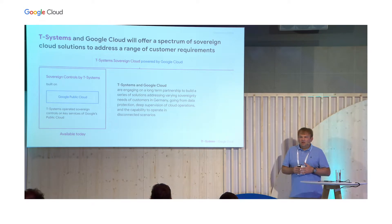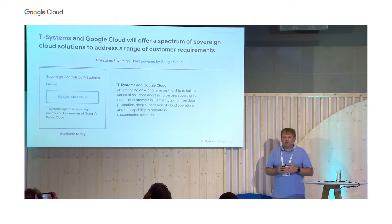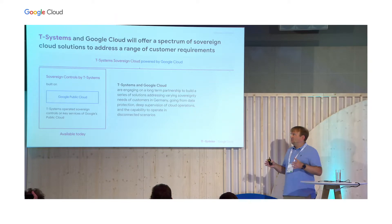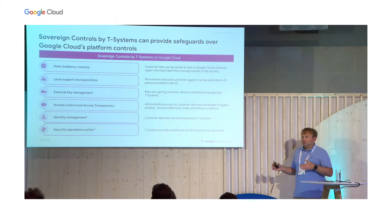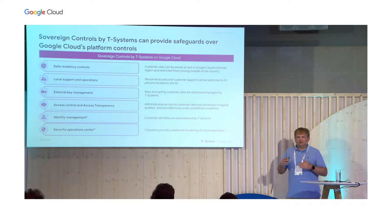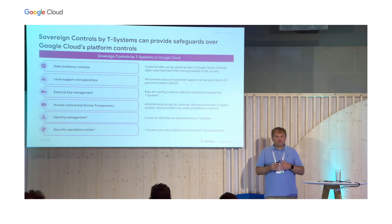Looking at Germany, we started a partnership with T-Systems that is now offering sovereign controls for Germany in the DACH market, completely built on public cloud. A long-term partnership was established between T-Systems and Google to address a variety of sovereignty needs in Germany, going from data protection and deep separation of cloud operations to the capability to operate in disconnected scenarios. The product is called Sovereign Controls by T-Systems, and it provides safeguards over GCP platform controls through data residency controls, local support and operations, external key management, access control, and access transparency. In the future, T-Systems will offer additional controls like identity management and a security operations center.